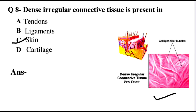Question number 8 relates to dense irregular connective tissue. As the name suggests, connective tissue works to connect organs and support them. Dense irregular connective tissue is found in the dermis. This is the right answer.